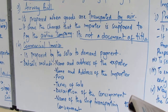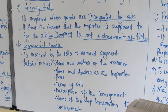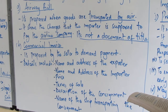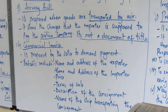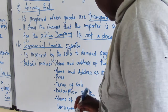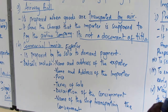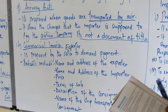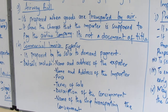Then we have the commercial invoice — just like a regular or normal local invoice that you normally use. From the definition of invoice, it is used to demand payment. All invoices are used in demanding payment upon delivery of goods. It is prepared by the seller — the exporter — to demand payment from the importer. It should contain the name and address of the exporter, the name and address of the importer, the price of the goods, and the terms of sale.